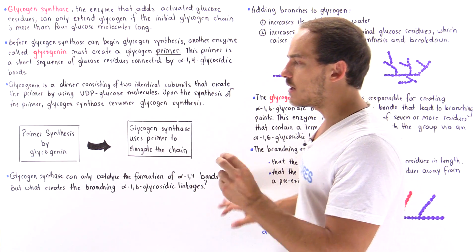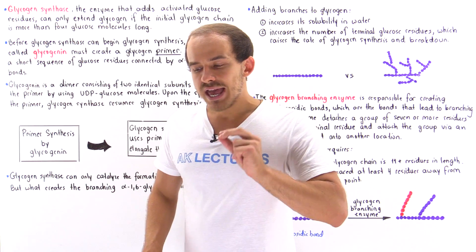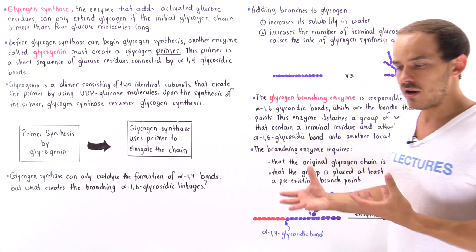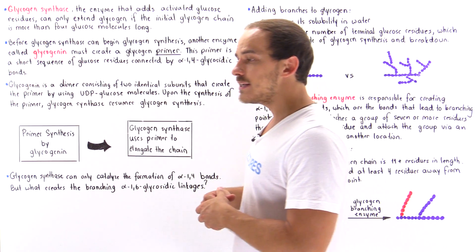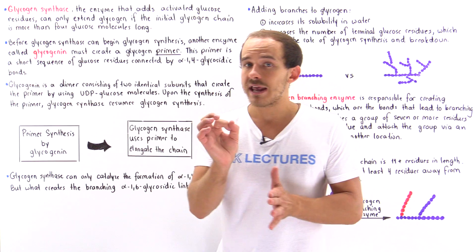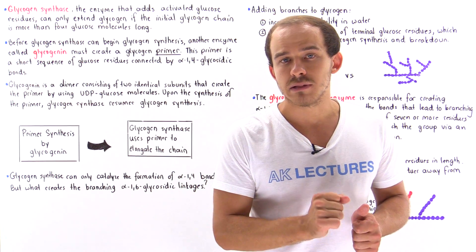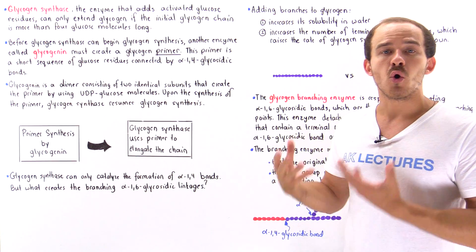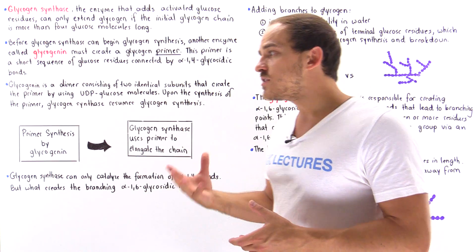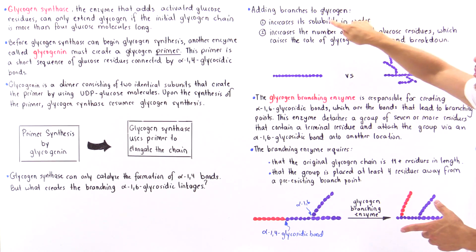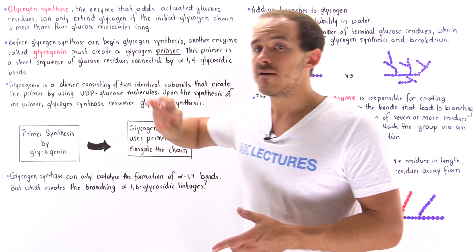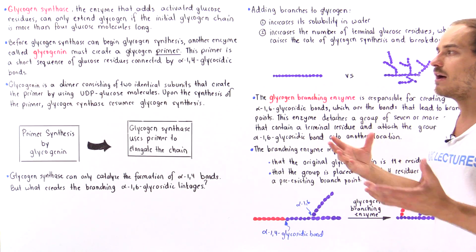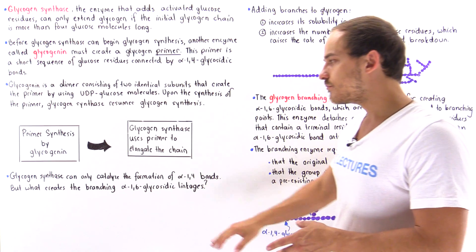There are two important benefits of these branching points. In skeletal muscle cells, liver cells, or any other cell that contains glycogen, the glycogen molecules are stored in tiny granules in the cytoplasm. The cytoplasm is predominantly water — a polar molecule. Branching increases the solubility of glycogen inside that cytoplasm, inside those tiny granules.